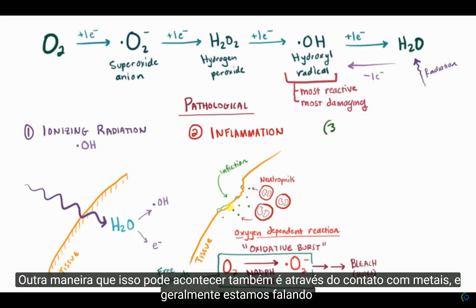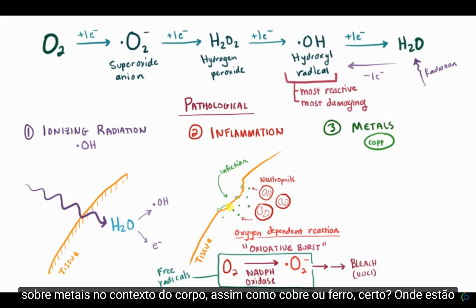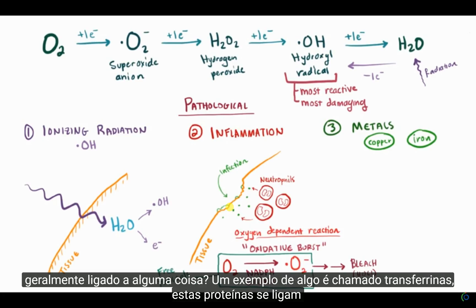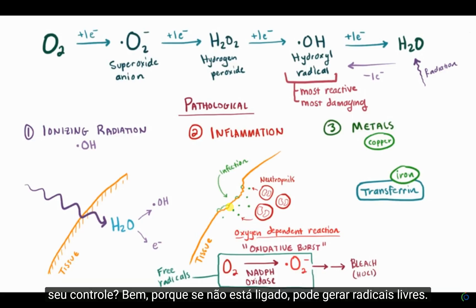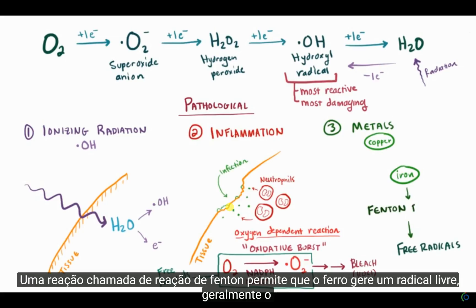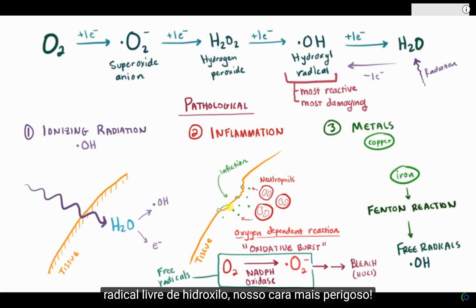A third way we can produce free radicals is through contact with metals — usually metals in the context of the body, like copper or iron, where they're usually bound to something. One example is transferrins — proteins that bind iron and help control the amount of iron in your blood. If it's not bound, if it's not controlled, it can generate free radicals. A reaction called the Fenton reaction allows iron to generate a free radical, usually the hydroxyl free radical — our most dangerous one.